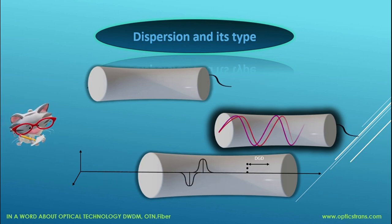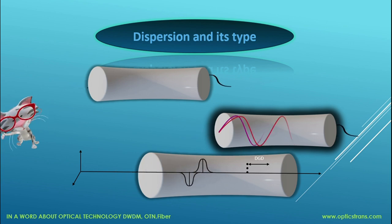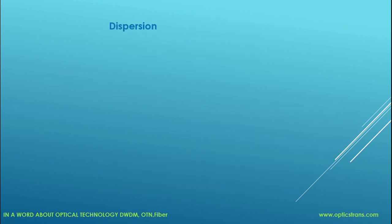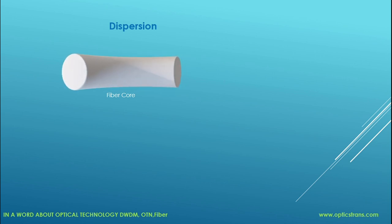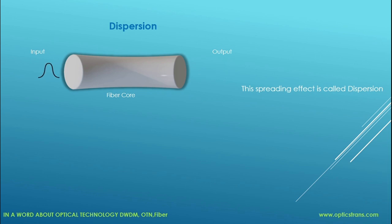Hello everyone, today in this video I am going to cover what is dispersion and its types. The word dispersion is commonly used when you are working on an optical network. To understand dispersion, we will use a fiber and transmit an input pulse into the fiber and verify the output. As you can see, a pulse is traveling down a fiber and the pulse is spread out — this spreading effect is called dispersion.